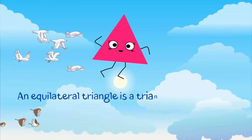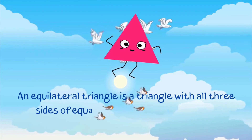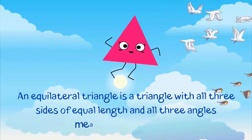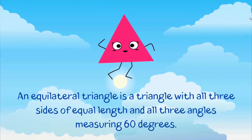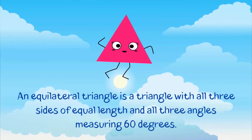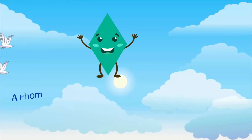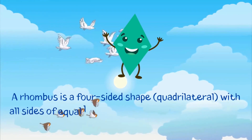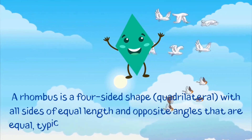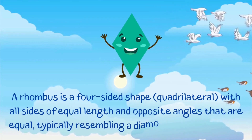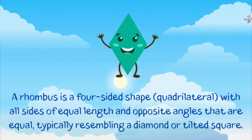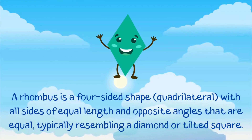An equilateral triangle is a triangle with all three sides of equal length, and all three angles measuring 60 degrees. A rhombus is a four-sided shape, or quadrilateral, with all sides of equal length and opposite angles that are equal, typically resembling a diamond or tilted square.